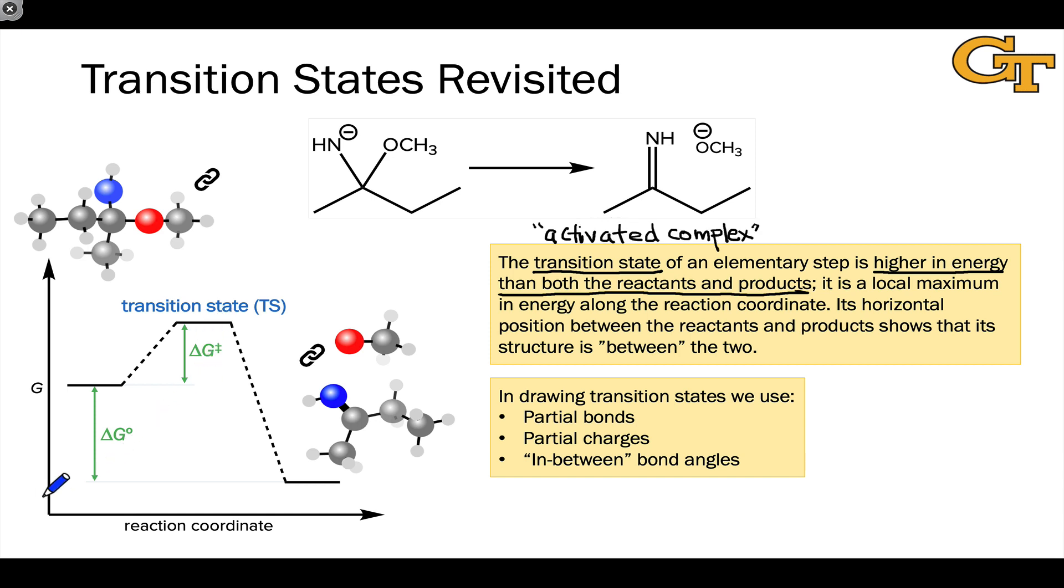If we think about the position of the transition state along the reaction coordinate, we realize that its structure is intermediate between the structures of the reactants and products. The reaction coordinate is a measure of the geometry of the reactants as they transform into products. The transition state shows up between the reactants and products along the reaction coordinate axis, telling us that its structure is between those of the reactants and products. To represent that between structure, we need to use a couple of rather strange conventions.